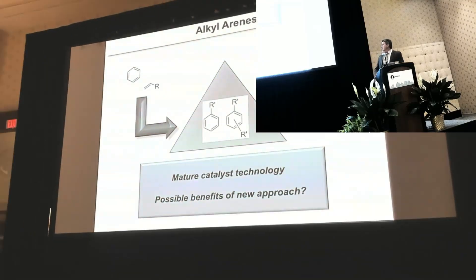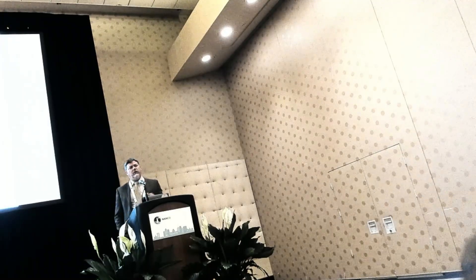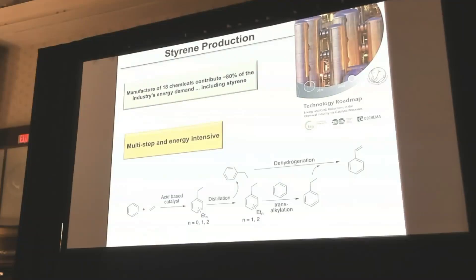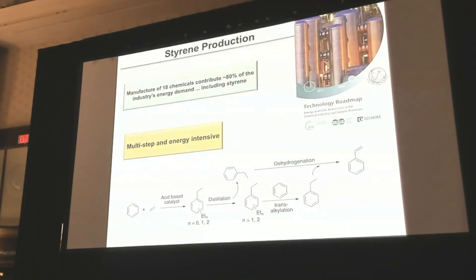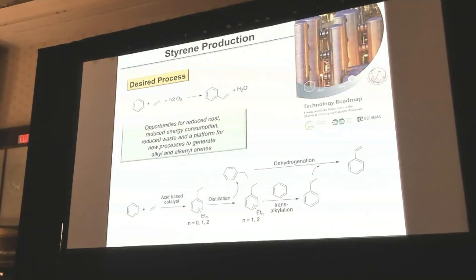This is a mature catalyst technology. What are the possible benefits of the new approach? Shown here is a simple overview of the current route to make styrene. The reaction involves benzene ethylation, and there's polyethylation. Transalkylation allows purification of the ethylbenzene. The polyethylated products are combined with benzene over a transalkylation catalyst to optimize yield. Then there is an endothermic dehydrogenation step to make styrene. It's a multi-step process. Perhaps a more efficient, direct route — the conversion of benzene, ethylene, and oxygen directly to styrene — would be desirable. But with acid-based catalysts, it's generally not a viable accessible route.